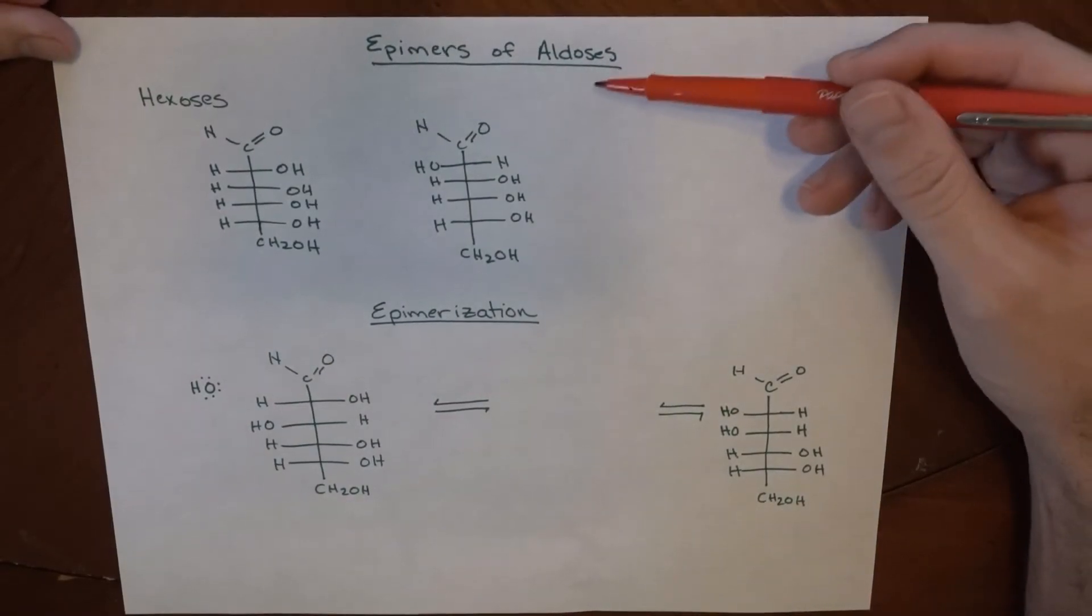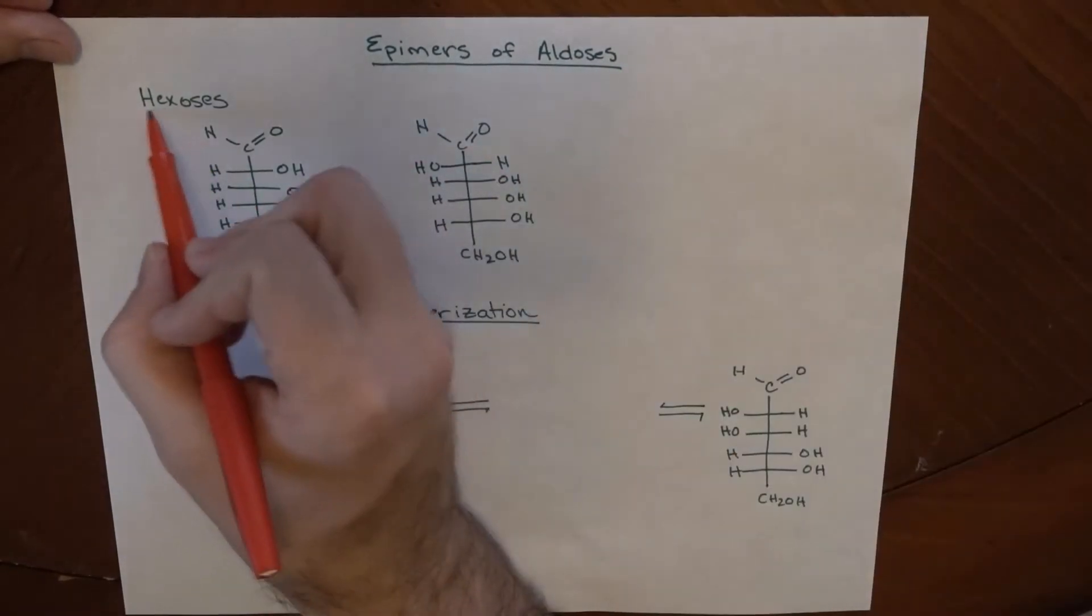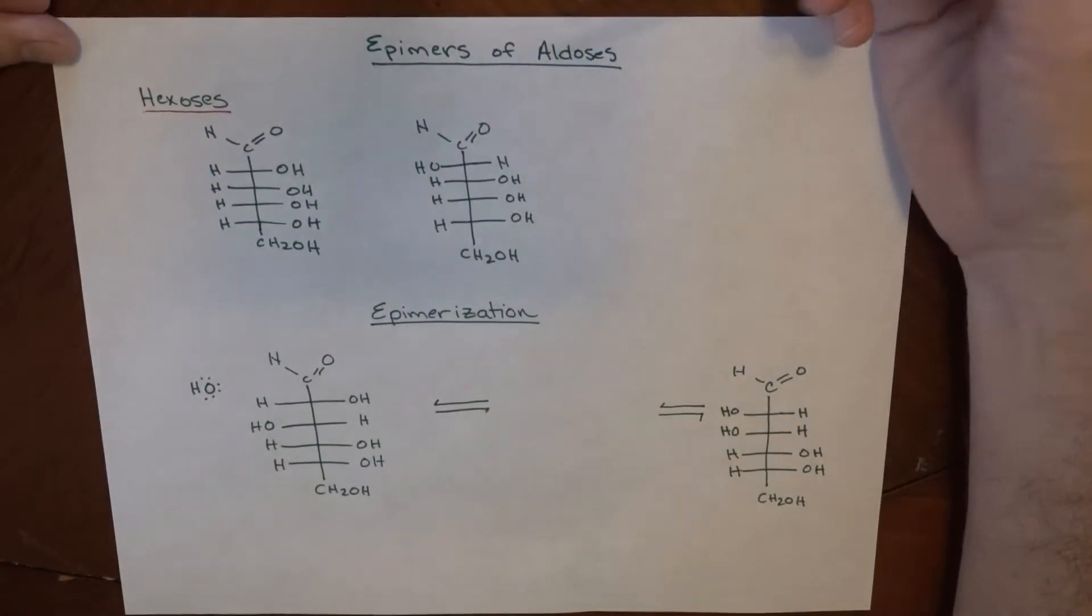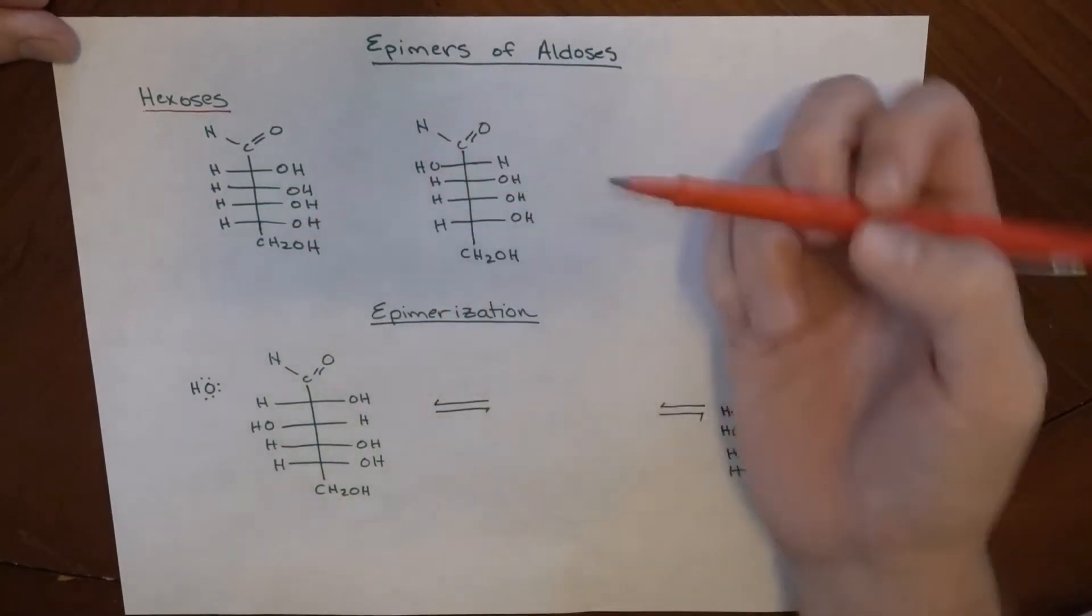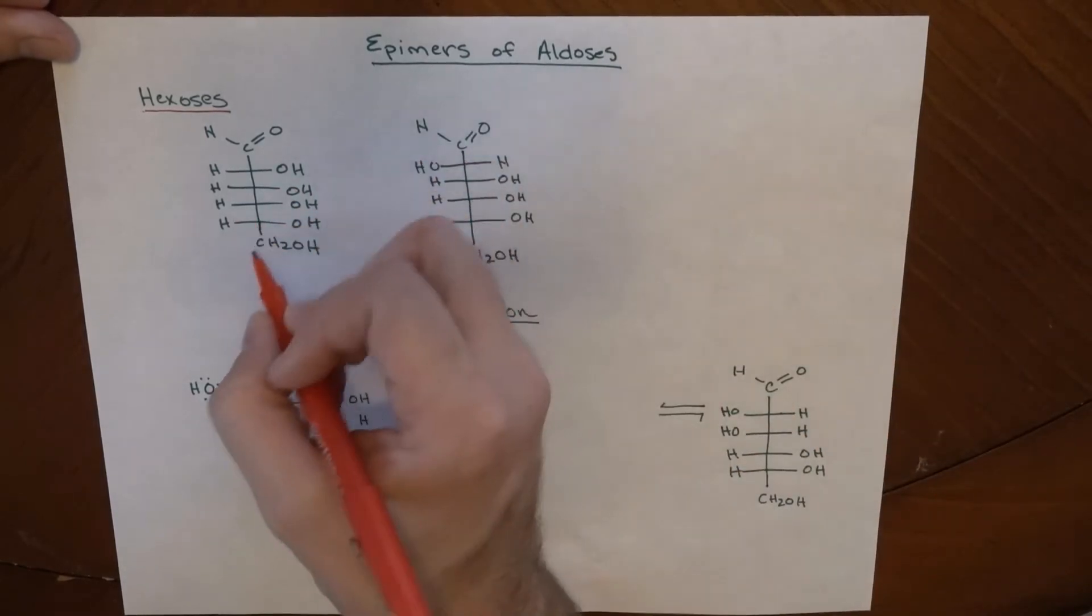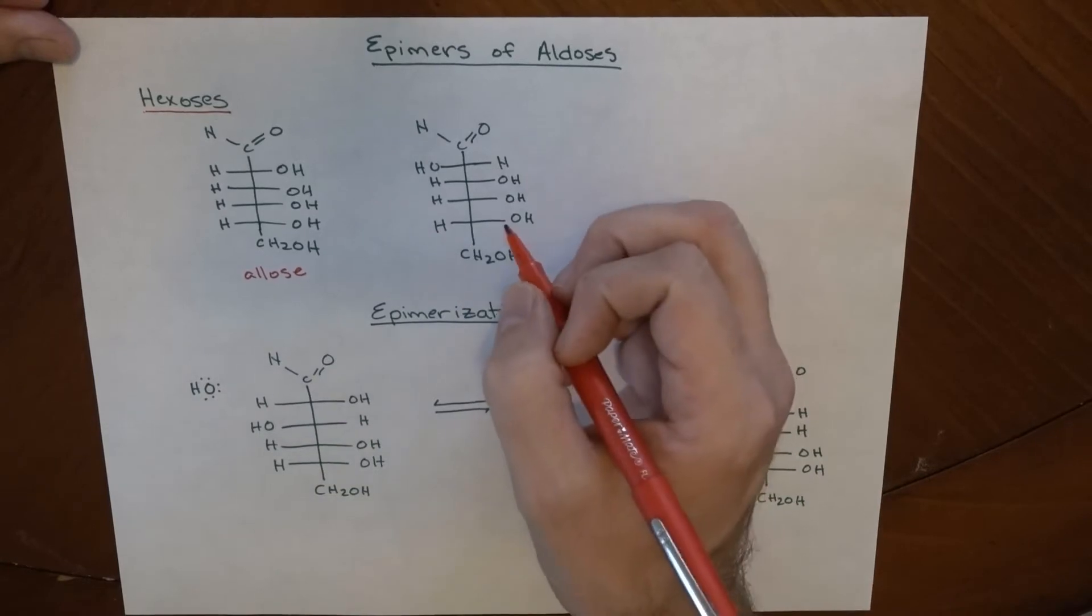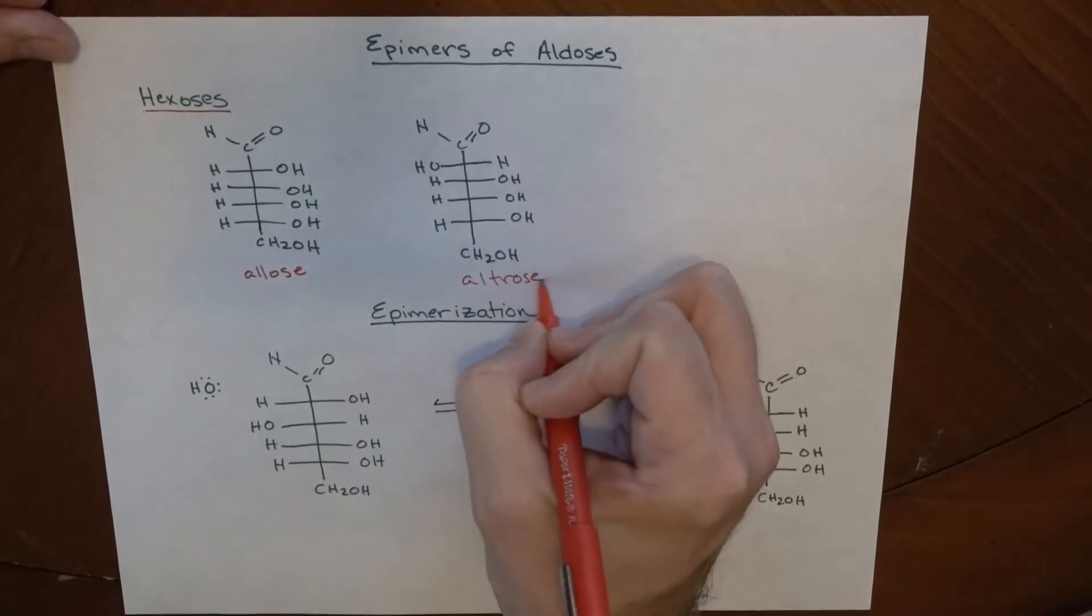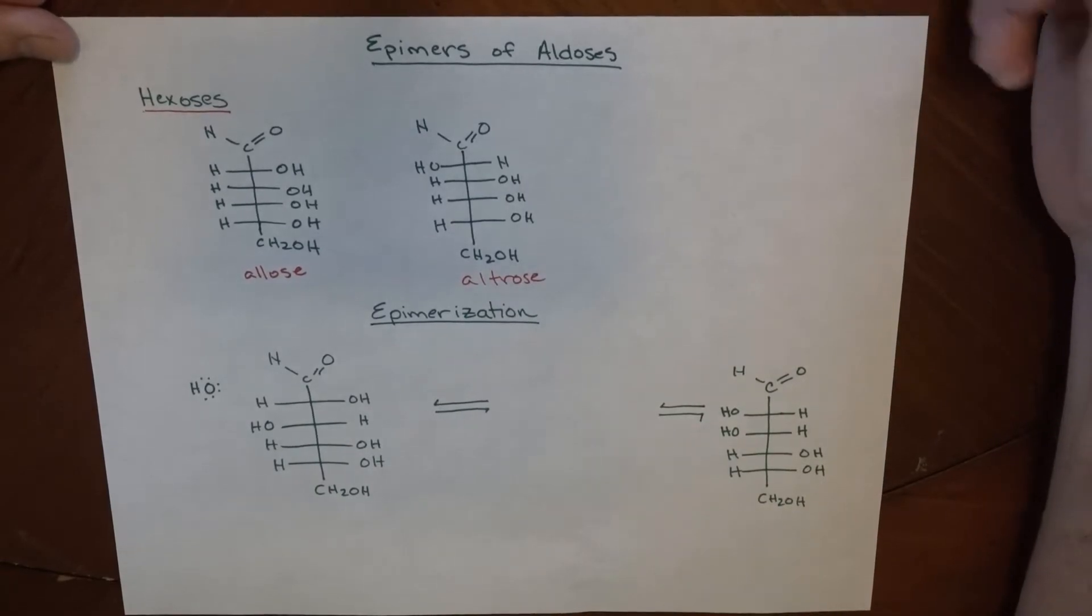So we're dealing with aldoses here, specifically hexoses, and the ways in which they differ from one another. This is a hexose, an aldohexose known as allos, and this is one known as altros.